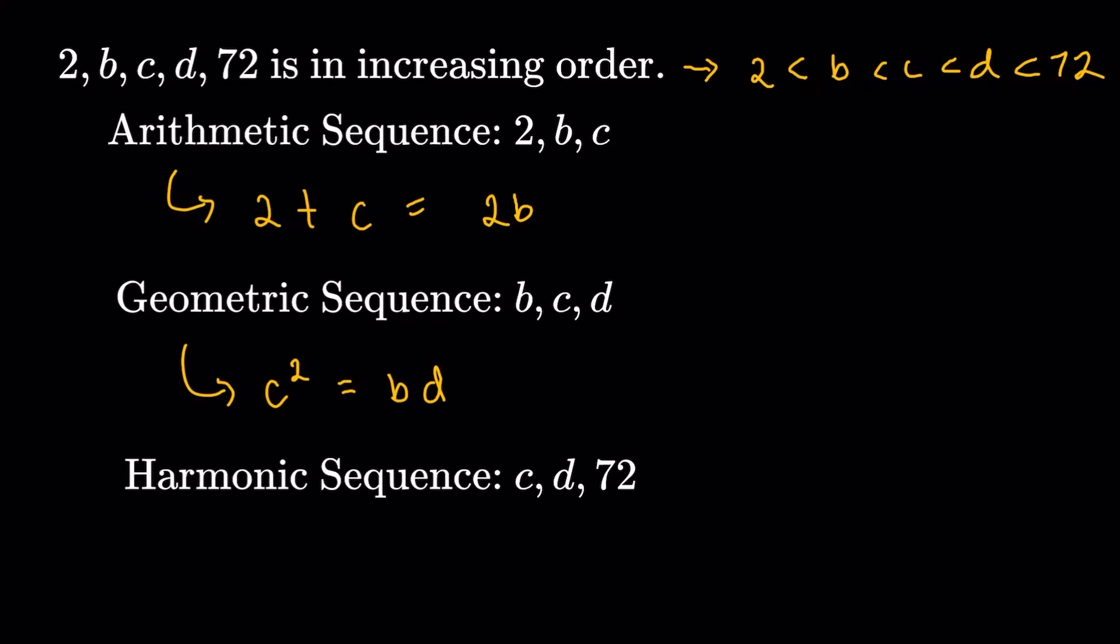Now for the harmonic sequence, three terms of a harmonic sequence, if we take the reciprocal of it, it's going to be an arithmetic sequence. So we could use pretty much the same property in the arithmetic sequence. So C, D, and 72 here in the harmonic sequence, it's going to tell us that 1 over C, 1 over D, and 1 over 72 are in arithmetic progression. And I could just use the property again, first plus last, so 1 over C plus 1 over 72 is going to be twice the middle, so 2 over D.